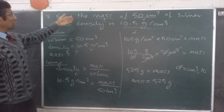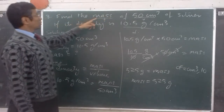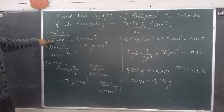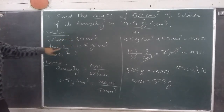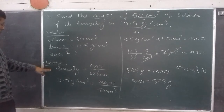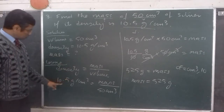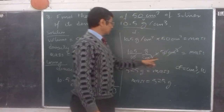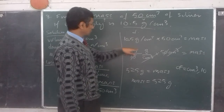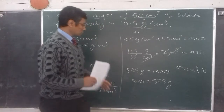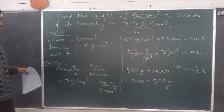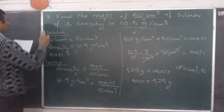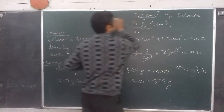The question asks for the mass of 50 centimeter cube of silver with density 10.5 gram per centimeter cube. Volume is 50 centimeter cube, density is 10.5 gram per centimeter cube, find mass. Using the density formula, substituting values, cross multiplying, getting rid of the decimal point, using common factors centimeter cube and 10, we are left with 105 into 5 grams which gives 525 grams. The mass of this silver piece is 525 grams. You can pause the video and copy.